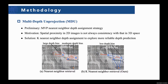Here we introduce the details of the MDU. When estimating depth from camera pixels, previous work like MVP uses the nearest neighbor retrieval strategy as shown in figure A. Although effective, such estimation ignores the fact that spatial proximity in 2D images is not always consistent with that in 3D space. Therefore, we present the key nearest retrieval for more reliable depth estimation.